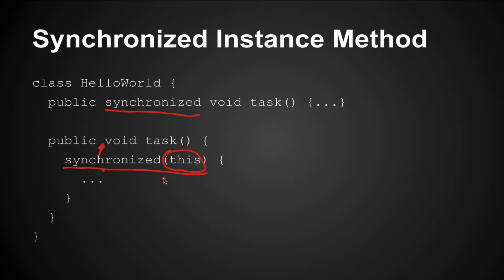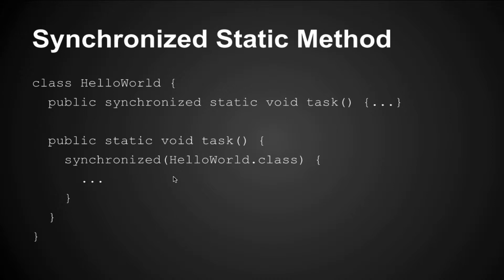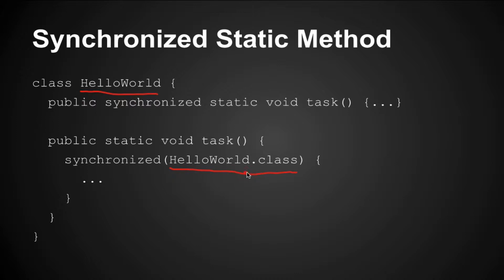You can do the same thing on a static method. If you synchronize a static method, you are actually locking the class itself. In this case, the class name is HelloWorld, so it implicitly locks HelloWorld.class. That is what synchronizing a static method does.